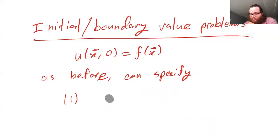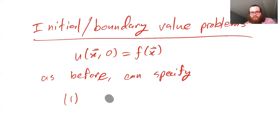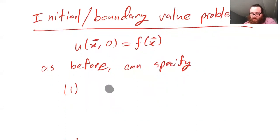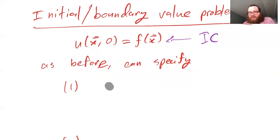The initial condition is just: here's our temperature distribution depending on space at time zero, and that's going to be some initial temperature distribution. So this is our initial condition.